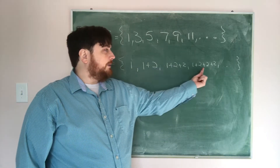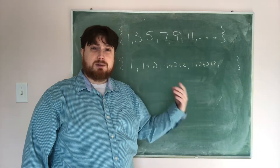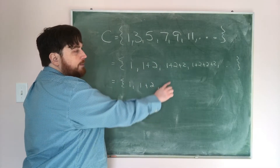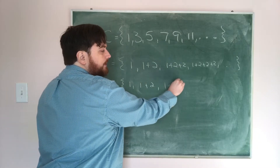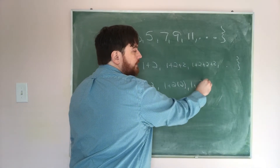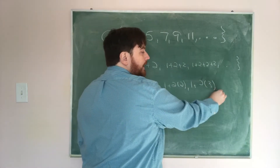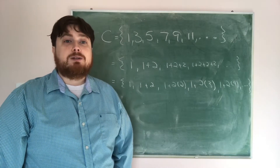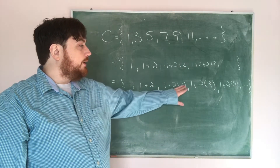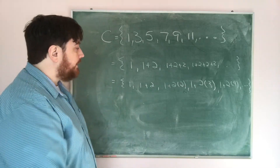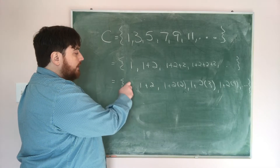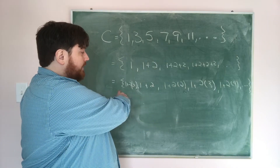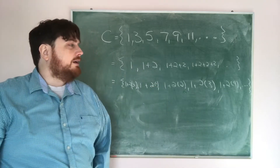The next thing I'm going to do is simplify this pattern, because writing plus 2 plus 2 plus 2 gets long. I can rewrite this as 1, then 1 plus 2, then 1 plus 2 times 2, then 1 plus 2 times 3, then 1 plus 2 times 4, continuing indefinitely. Each term looks like 1 plus 2 times some integer. Even 1 itself can be rewritten as 1 plus 2 times 0, so all numbers fit that pattern.